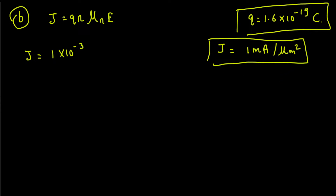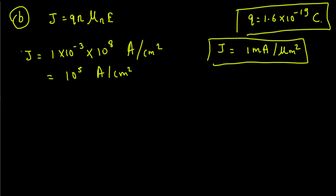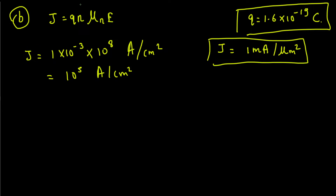To convert: 1 milliampere becomes 10⁻³ amperes. For micrometer squared to centimeter squared: 1 micrometer = 10⁻⁴ cm, so 1 μm² = 10⁻⁴ × 10⁻⁴ = 10⁻⁸ cm². Bringing 10⁻⁸ from denominator to numerator gives 10⁸, so combined with 10⁻³ we get J = 10⁵ amperes per centimeter squared.